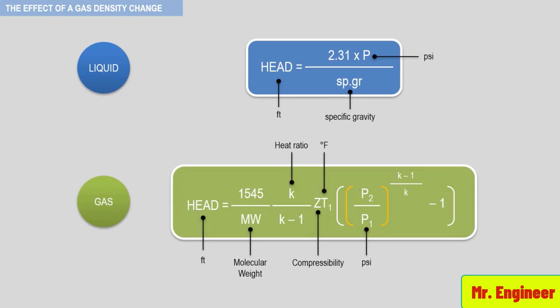Referring again to the fluid head equations for a liquid and a vapor, you can see that the pressure ratio developed for a gas is dependent on temperature, molecular weight, the specific heat ratio, and compressibility.